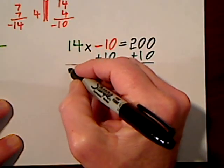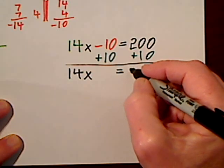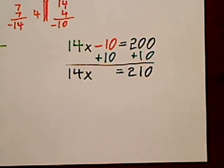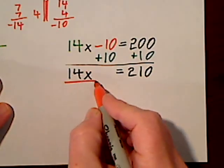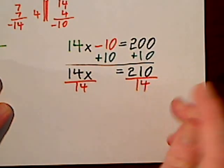So this leaves us with 14x. That's a 0, I don't have to bother write it. And we have 210. Again, we want x by itself, so divide by 14, divide by 14.